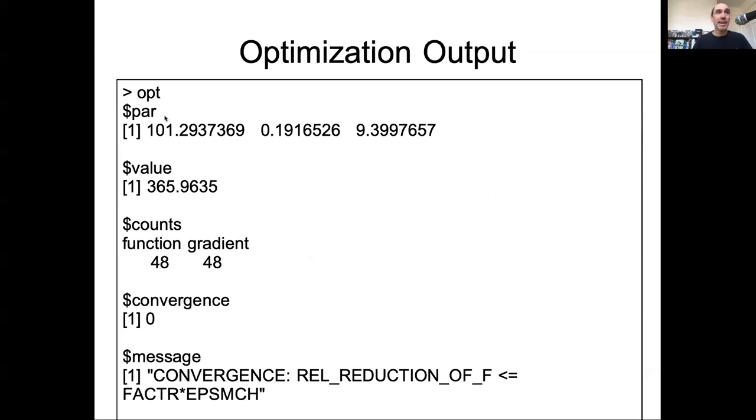What we get out, we get out again. Par is our best fit of the parameters. Value is the negative log likelihood at those values. That's a handy thing to have if you're calculating something like an AIC. How many guesses it took? 48. Convergence status zero, which is success. And here it gave me a message telling me that it converged based on relative reduction of the function. So it's that delta Y being smaller than some threshold value is what caused it to decide to stop.